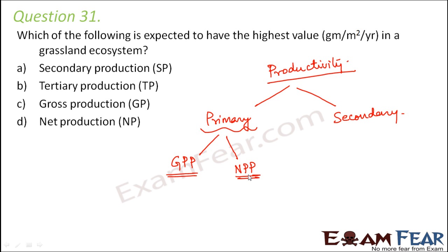Net productivity is the total organic matter that is stored by the producers after all expenses. For example, if your salary per month is 5000 rupees, that is your gross productivity — the total money you receive. Net productivity is the money you save after all expenses. If you receive 5000 rupees but spend 1000 on transportation, 500 on food, and 1000 on rent — spending around 4000 total — then 1000 rupees remaining is your net productivity.